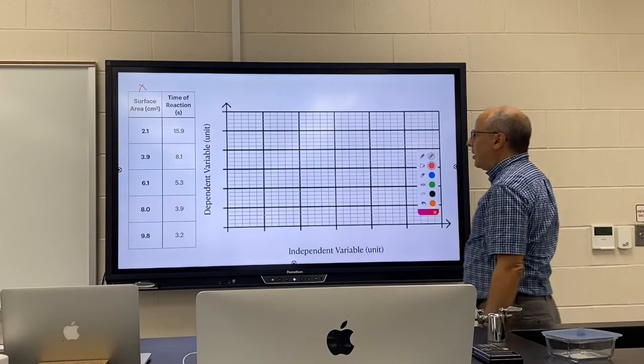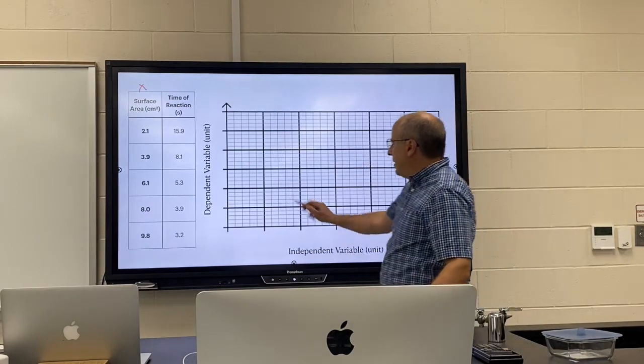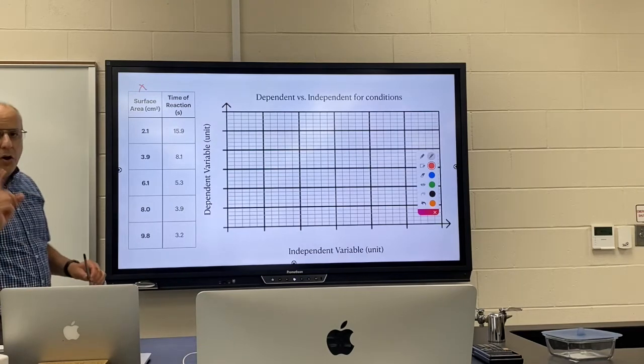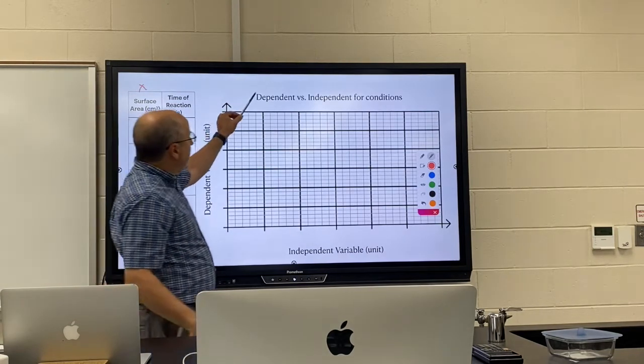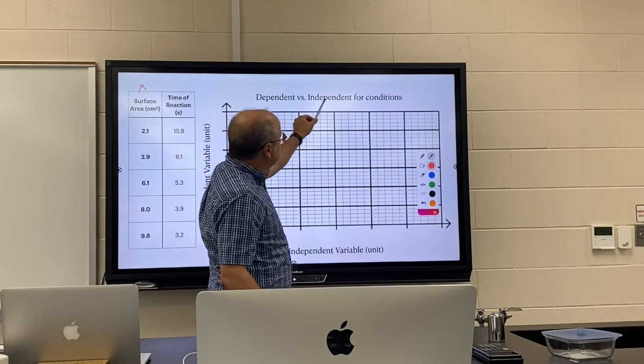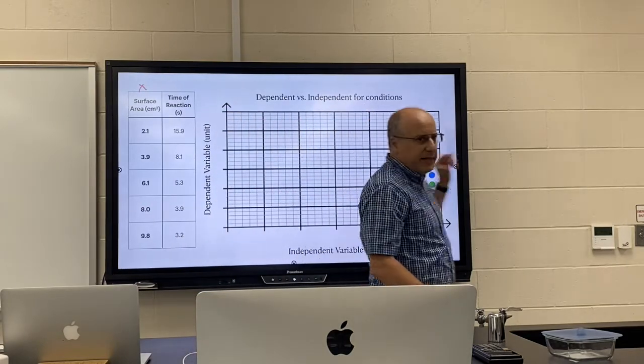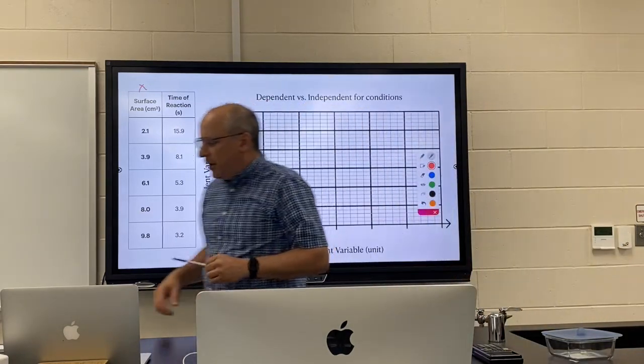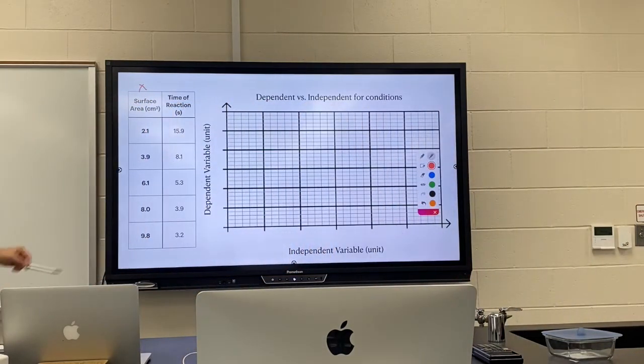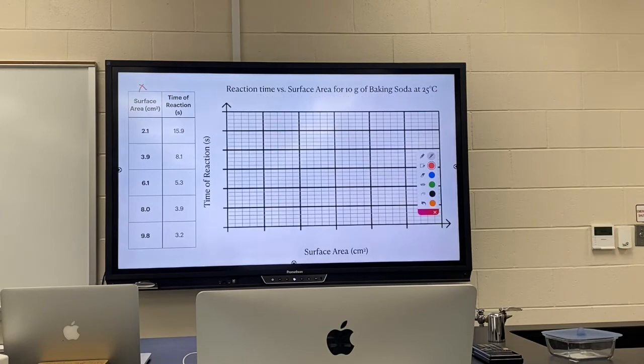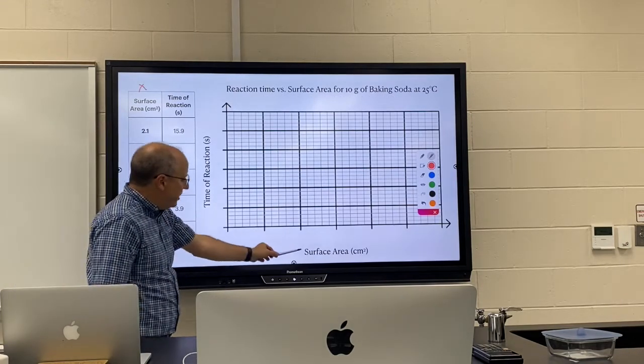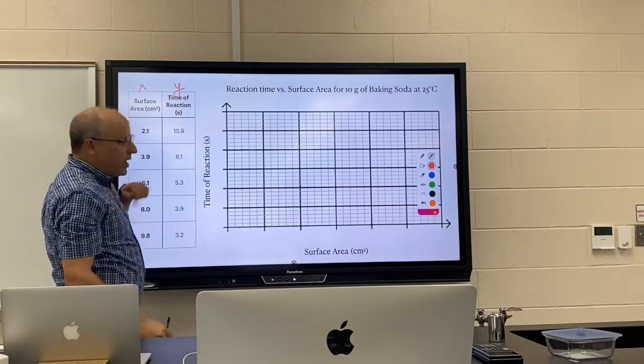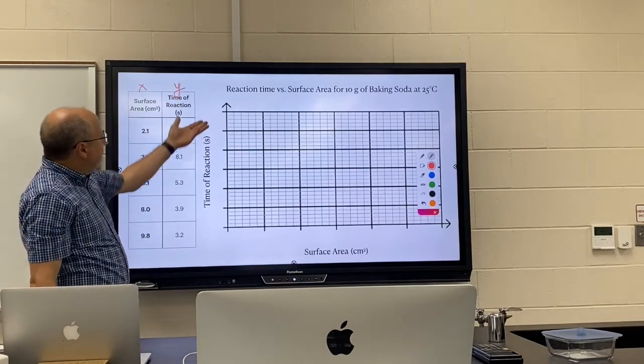Okay, so independent, dependent. Then you want to put a title on your graph, and it always works the same way. You write dependent versus independent, for the conditions whatever those conditions happen to be. So let's see it in real life.